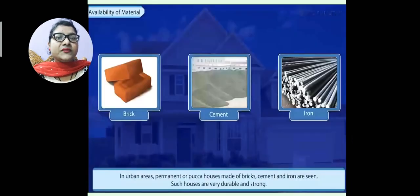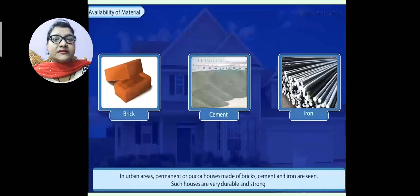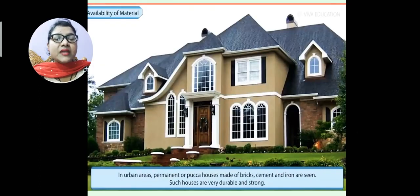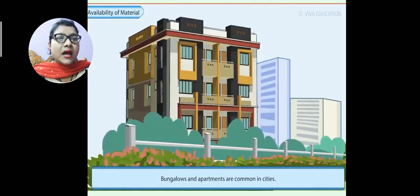In urban areas — cities and towns — people use bricks, cement, and iron to make pakka houses or permanent houses. These houses are very strong and durable, long-lasting, and do not require repair from time to time. You can see these pakka houses — bungalows and apartments — which are found in urban areas.